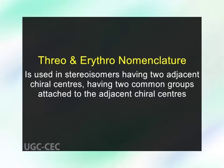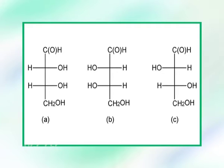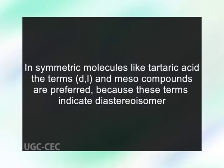Threo and erythro nomenclature is used for stereoisomers having two adjacent chiral centers with two common groups. These names are derived from erythrose and threose, the tetrasugars. When the two like groups in the Fischer projection are on the same side, the isomer is called erythro; if on opposite sides, it is called threo. These terms are only used for molecules without symmetric ends. In symmetric molecules like tartaric acid, the terms D, L, and meso are preferred, as they indicate the diastereoisomer and whether or not an enantiomer exists.